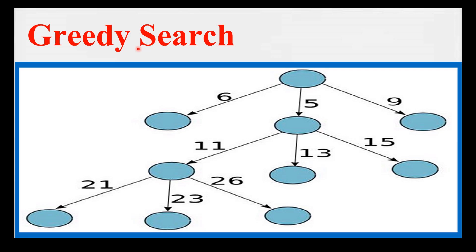Hoping that these local choices will lead to the global optimum. Imagine you are writing a story and you have just written the sentence 'The cat sat on' — now you need to complete this sentence by choosing the most likely word to follow. Greedy search would select the most probable next word based on the given context.